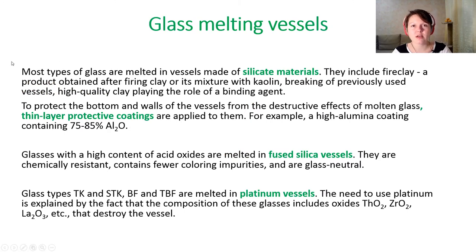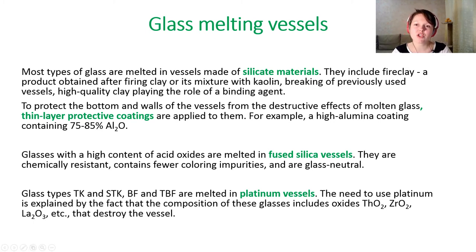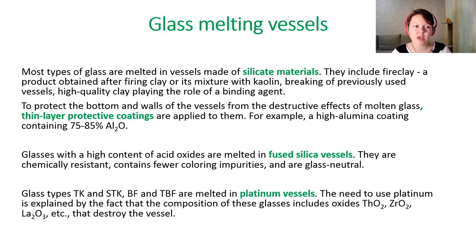Glass melting vessels are divided into several types by material. Most types of glass are melted in vessels made of silicate materials — vessel cords, crucibles, or melting tanks — usually based on fire clay, a product obtained after firing clay or its mixture with kaolin. To protect the bottom and walls of such vessels from the destructive effect of molten glass, which is very chemically aggressive, we use multi-layer protective coatings based on aluminum oxide, which is a very high-temperature material.